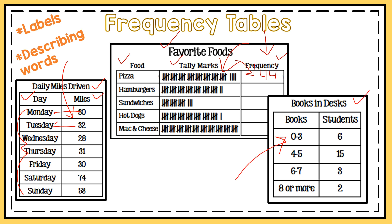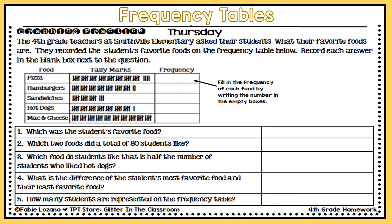Another example of frequency tables are tables that have a range. This one represents books in students' desks. Books are labeled in one column and students in another. So I know that 6 students had zero to three books in their desk, 15 students had four to five books in their desk, and six to seven books were in 3 students' desks. Each one of these frequency tables is one that you might see on your work.